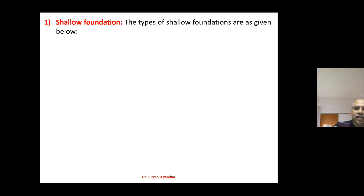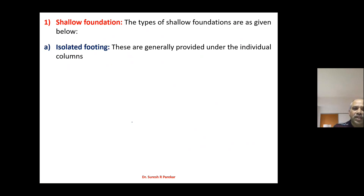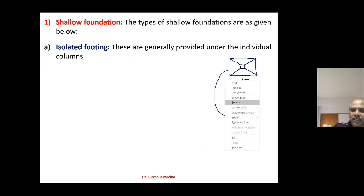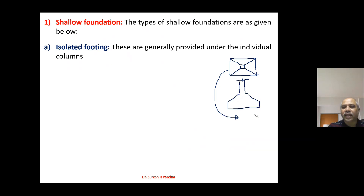The types of shallow foundation are given as below. First, we have isolated footing. These are generally provided under individual columns — we have one column and we provide this footing on it. If you draw the plan and elevation, we have the column with some offset and that is the isolated footing. This isolated footing is preferred only for single or individual columns.